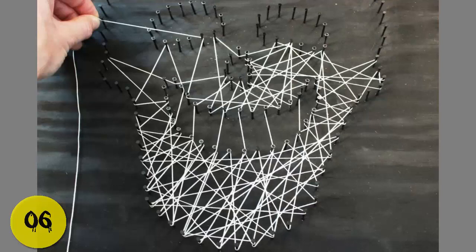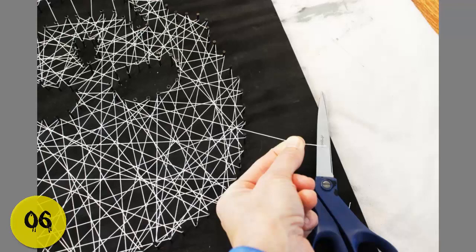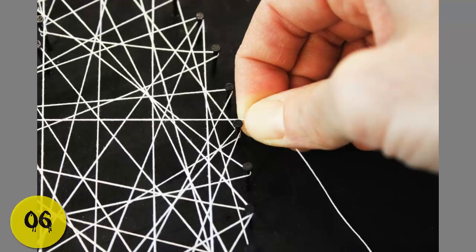A tip for successful string art: vary the direction and angle of your strings evenly across the space. Keep the string about one-third to two-thirds down on the exposed nail itself, not right against your board but not right at the nail head either.